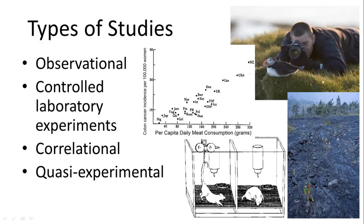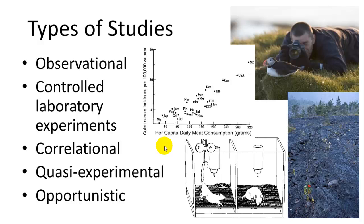We also have quasi-experimental studies, where you may not be able to control everything — studies done in the field where you are looking at specific variables but many confounding factors can also affect it. You are trying to run an experiment but at such a large scale or in the field that you can't make it fully controlled. Finally, there are opportunistic studies — events which happen in nature that you can take advantage of. For example, a lava field where you study how plants and animals recolonize the area after the lava has cooled. You can't control any of the variables, but because it happened you can go in and make observational studies.